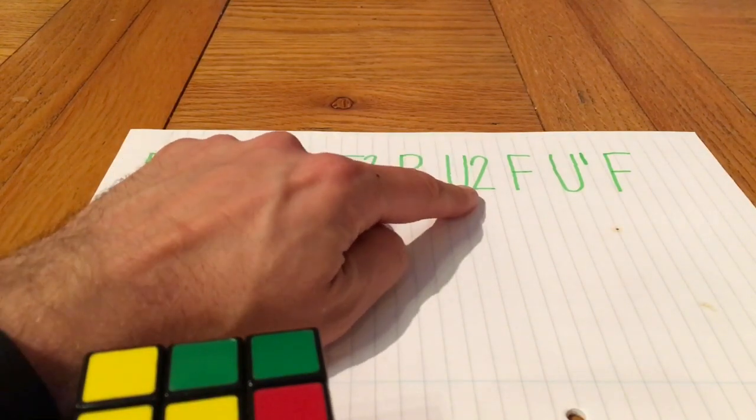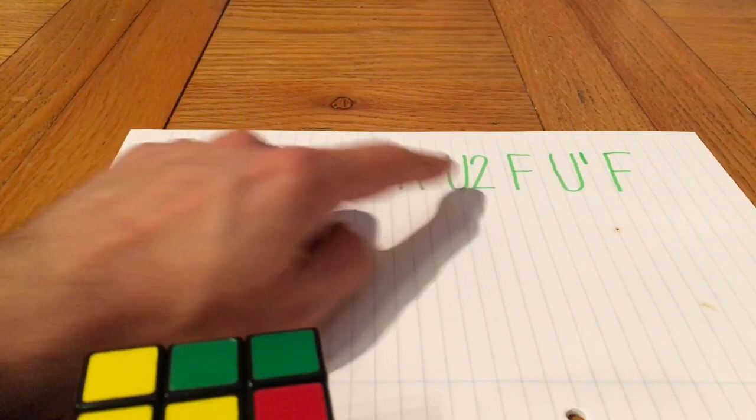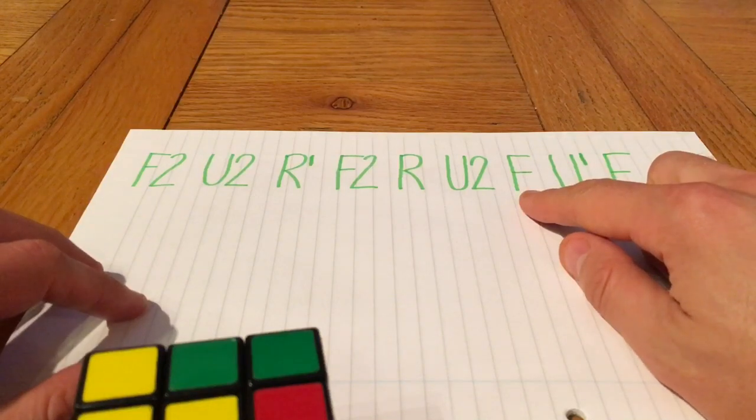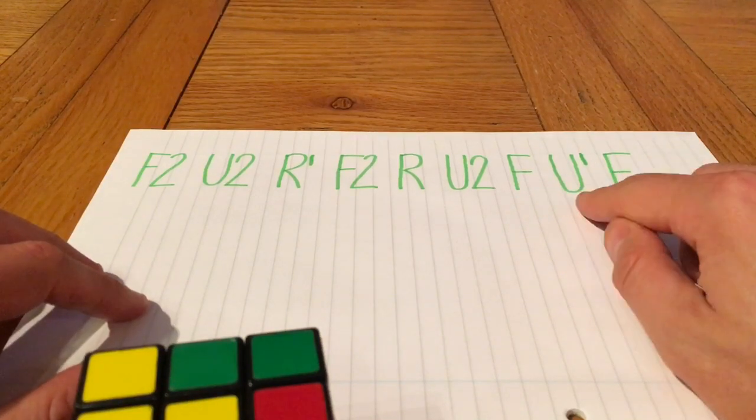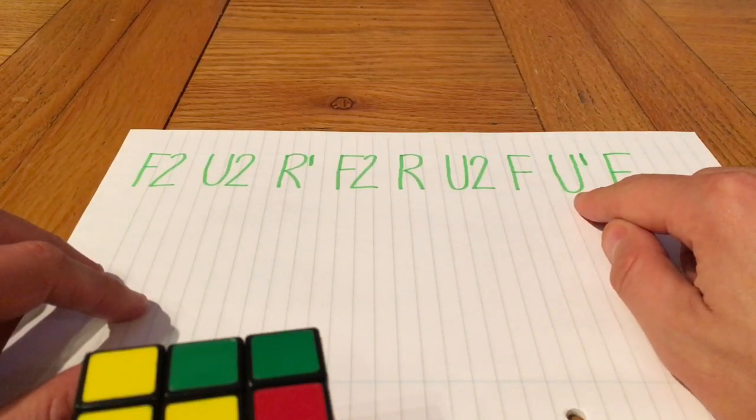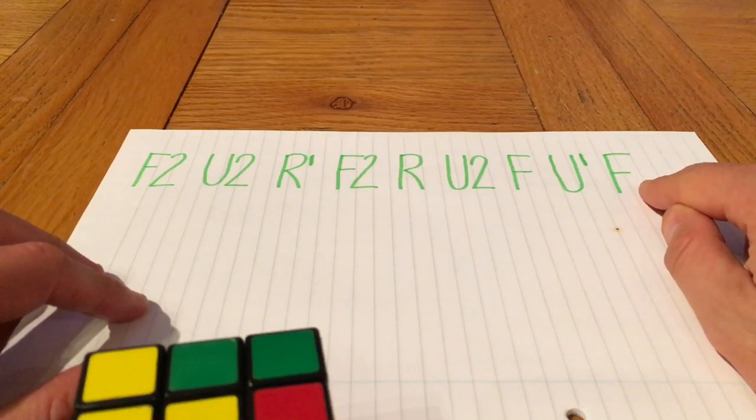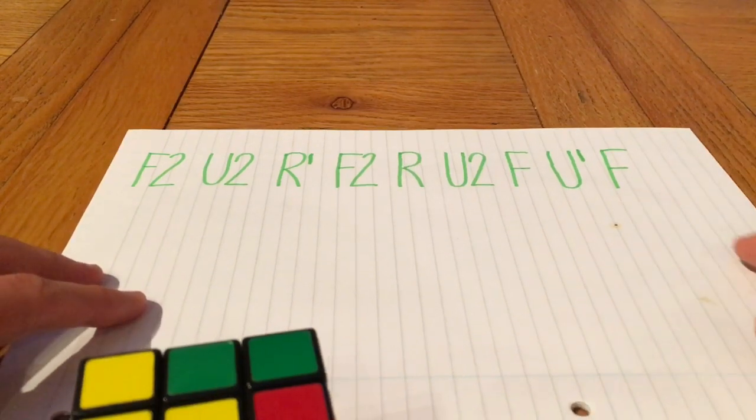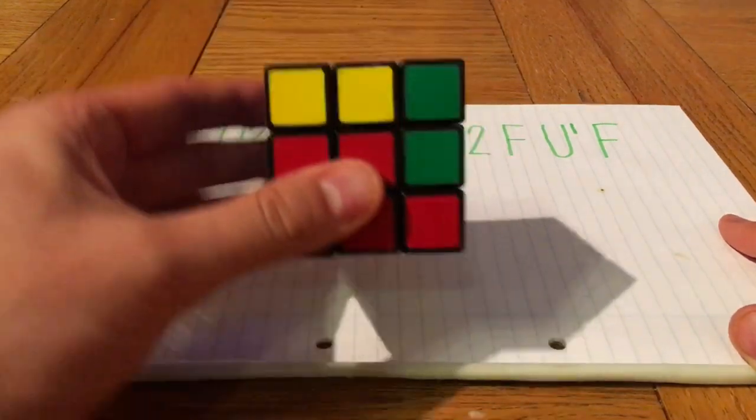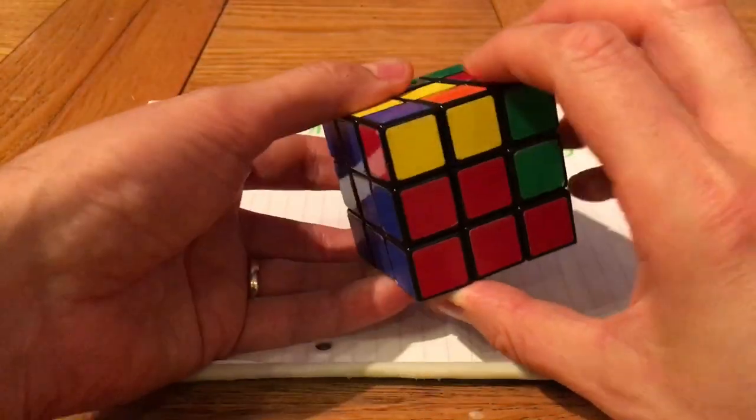A quarter turn on the right face, a half turn on the top face, a clockwise turn on the front, then an anti-clockwise turn on the top, and followed by a clockwise turn on the front face. So that's the algorithm and I'll show you how it works in practice just now.